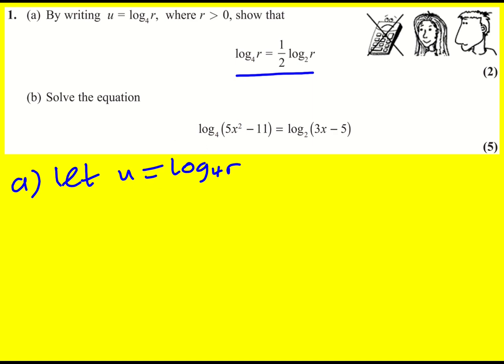Alright, I'm going to use the definition of logs essentially. So if I've got log to base 4 of r is equal to u, then it must be that 4 to the u is equal to r.